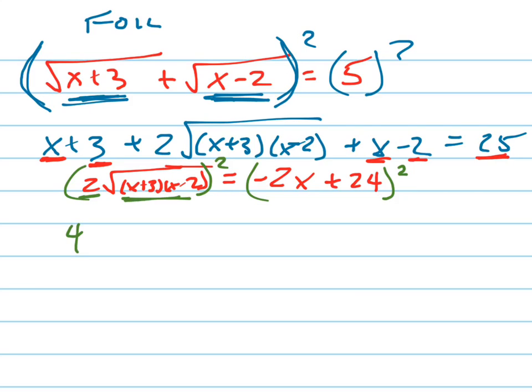So this squared is 4, this squared is (x+3)(x-2), this whole thing squared is positive 4x² minus 96x. See that's because again that's going to FOIL out - in my head I'm thinking -2x+24 times -2x+24.